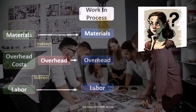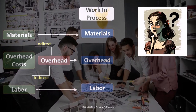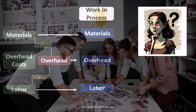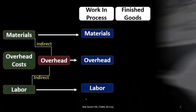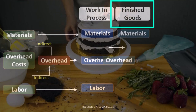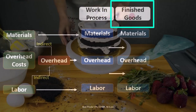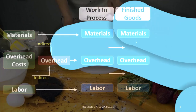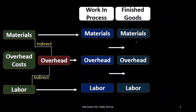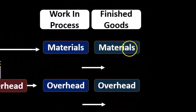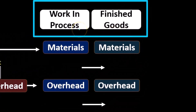Once we have these items in Work in Process, at some point we are going to finish them, and we can then transfer them to Finished Goods. Once in Finished Goods, the account includes all of these items — raw materials, overhead, and labor — within the job. We'll have a completed job in Finished Goods.